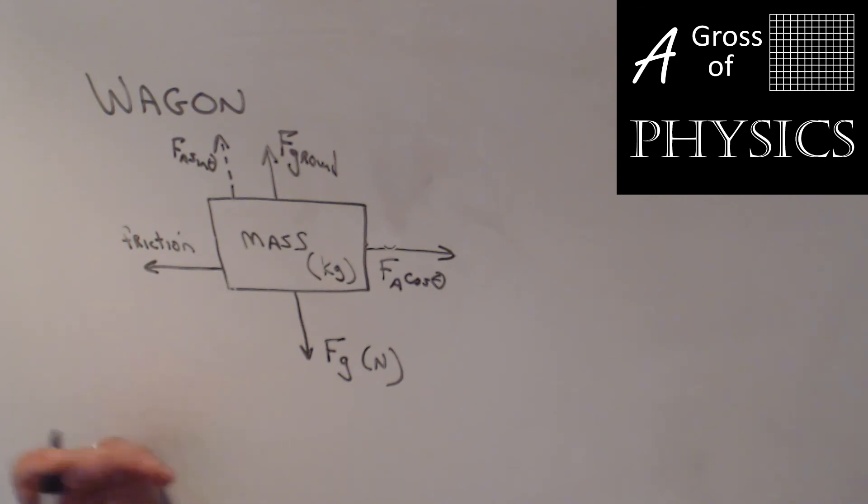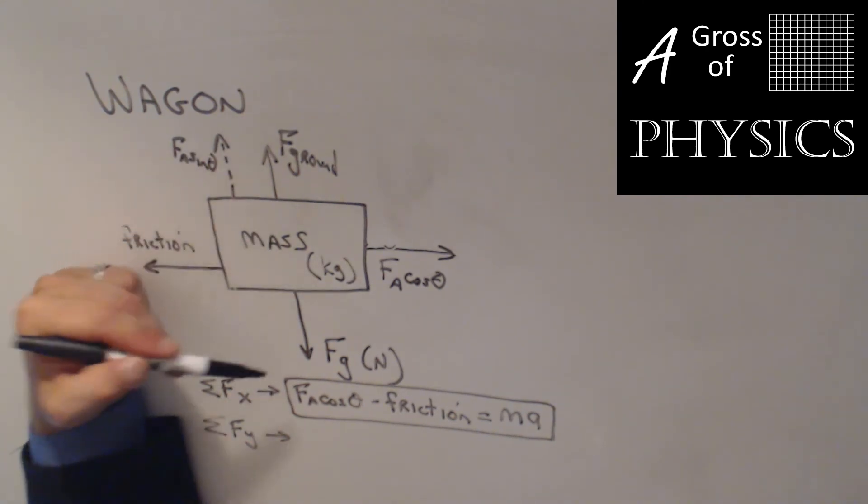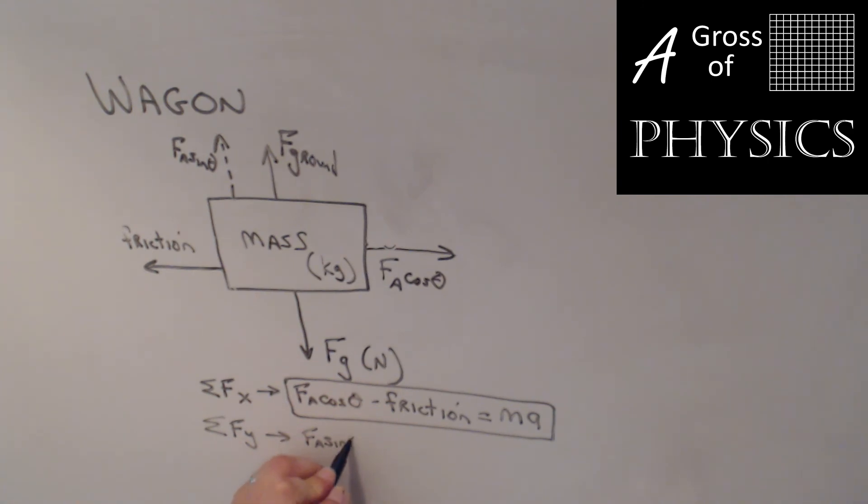So even though we don't have numbers yet, we could still set up an equation that governs the two directions. And in fact, what you'd have if you sum the forces in the x direction, the equation would look like the following: fa cosine theta, that's all the positive arrows, minus friction, equals, and you set your forces equal to ma. Now, we don't know numbers, but if we had some numbers, we'd be able to solve for whatever the unknown happened to be. If we do the same thing in the y direction, we actually have three forces now. We have fa sine theta plus f ground, and I'm going to spell out ground because otherwise it'll look like gravity, minus fg, which is gravity, and that equals ma.